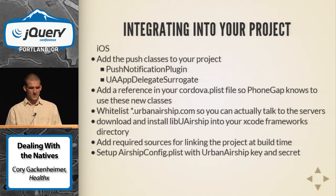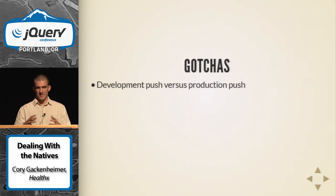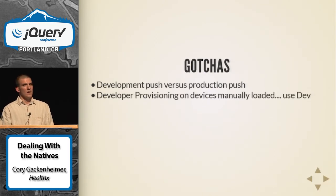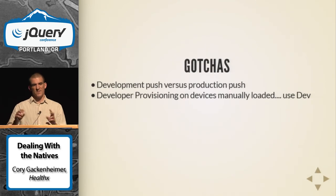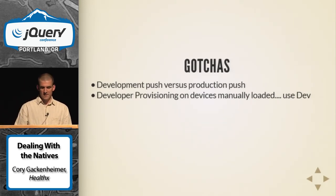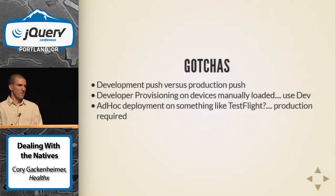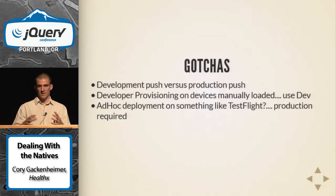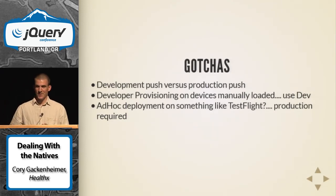A gotcha: if you don't add the required libraries, Xcode gets very angry. Also, watch out for development versus production push servers. If you're testing with a distributed team using TestFlight, you need an ad hoc build, which means you have to use the production push servers even in testing. Urban Airship won't tell you there was an error — it'll just not send the messages. That can cost you a couple of hours wondering why your push isn't arriving.